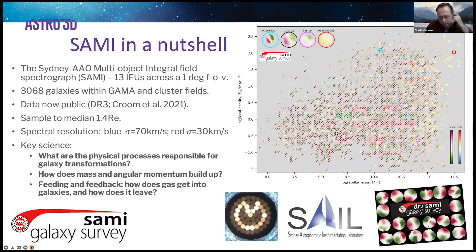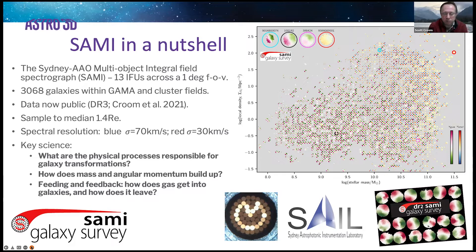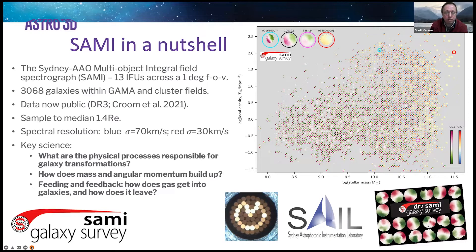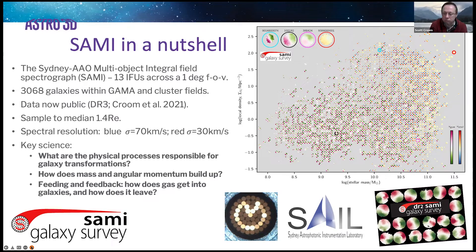For those who may not be aware, I want to give a very brief intro to SAMI. SAMI is the survey that used the SAMI instrument — the Sydney-AAO Multi-object Integral Field Spectrograph — which has 13 IFUs across a one-degree field of view. We targeted over 3,000 galaxies in a survey running for several years that finished in 2018, covering GAMA regions with exquisite multi-wavelength spectroscopic coverage and cluster fields providing a rich, dense environment. All that data is now public, so do have a look on Data Central — there's a huge array of different data products there.